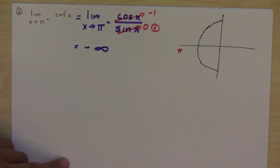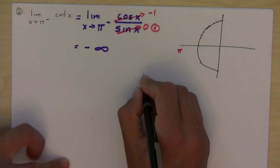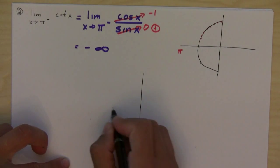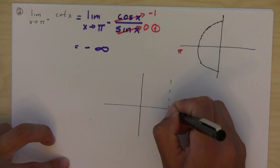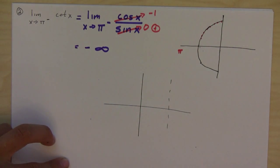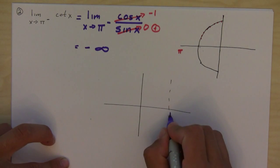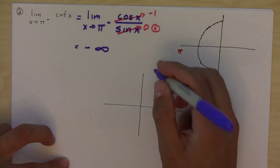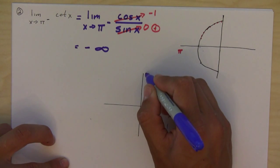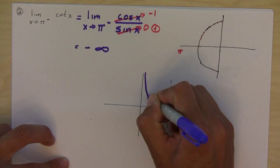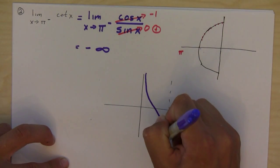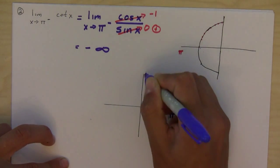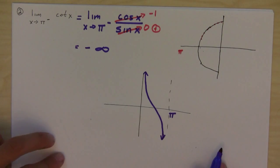If you remember the graph of cotangent, this verifies it. It looks something like that from zero to pi and then it just repeats itself.